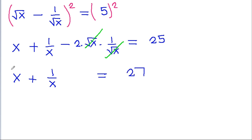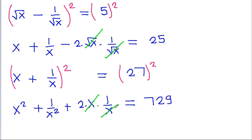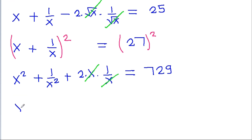And if we again square both sides, then we get x square plus 1 by x square plus 2 into x into 1 by x is equal to 27 square is 729. And x and x will get cancelled, and we get x square plus 1 by x square is equal to 729 minus 2 is 727.